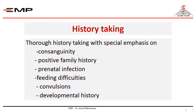Further history taking should include history of consanguinity between the parents, positive family history of a similar condition, prenatal infection during pregnancy, the presence of feeding difficulties, the presence of convulsions, and developmental history.